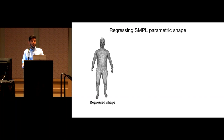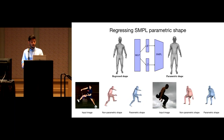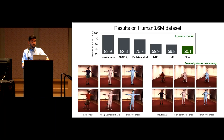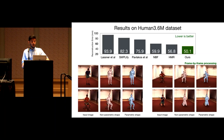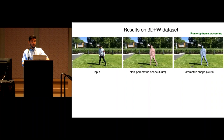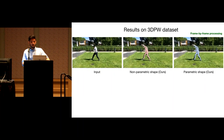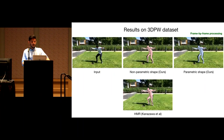We can generate the full mesh surface corresponding to the 3D human shape. When conforming to a specific parametric model is needed, a simple MLP regresses model parameters on top of the 3D shape. We benchmark on Human3.6M for 3D pose accuracy and on LSP for part segmentation, outperforming model-based approaches. On in-the-wild 3DPW videos our frame-by-frame results without temporal smoothing are more stable than the state-of-the-art.